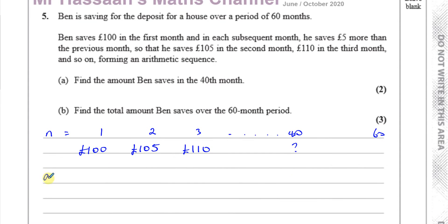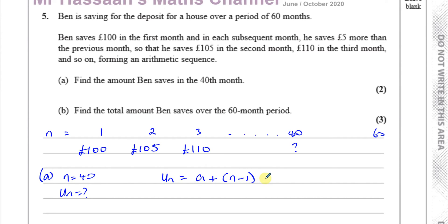So let's start with part A. They're asking about the 40th month — how much he saves in that month itself. So basically, we're looking for the 40th term. We want to know when N equals 40, what UN is. We know there's a general formula for the term in an arithmetic sequence: UN equals A plus N minus 1 times D. This is the nth term for an arithmetic sequence, and this formula is found in your formula book.